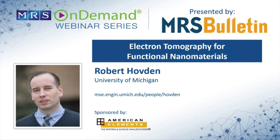One way researchers are innovating to reduce the size of the missing wedge artifacts is looking to new reconstruction algorithms. One that has shown a lot of promise in the last couple of years is compressed sensing, first introduced in the mathematics community by Candace and Tao in 2004. Paul Midgley's lab demonstrated applications in electron tomography in 2011. It seems to do a remarkable job at reducing the effects of the missing wedge. There are also iterative reconstruction methods that jump between real space and reciprocal space. Even without a missing wedge, you don't have perfect reconstructions, so you have to have a careful eye.